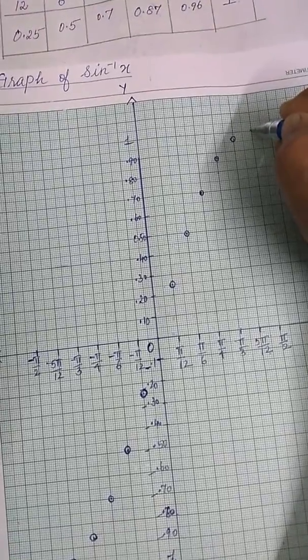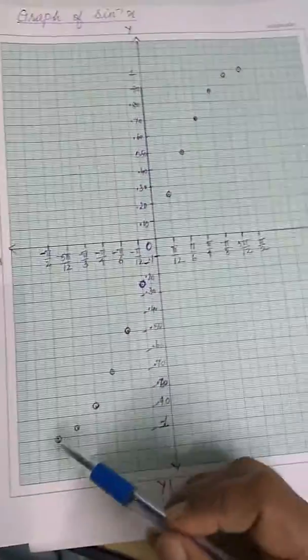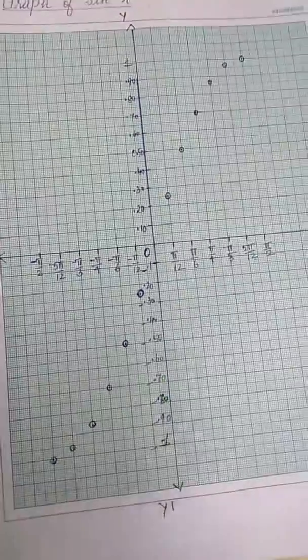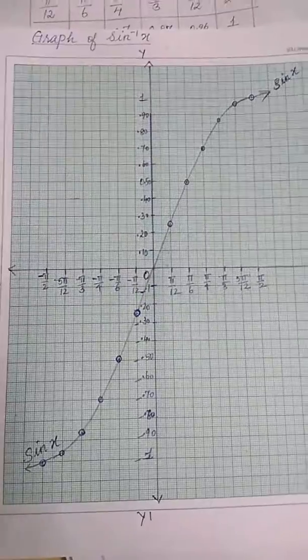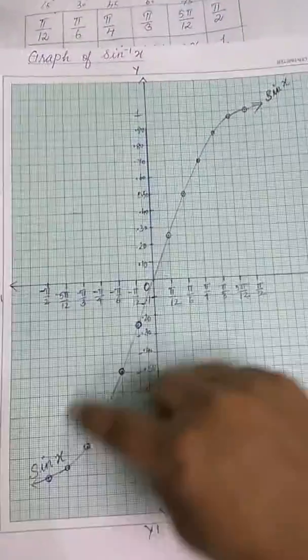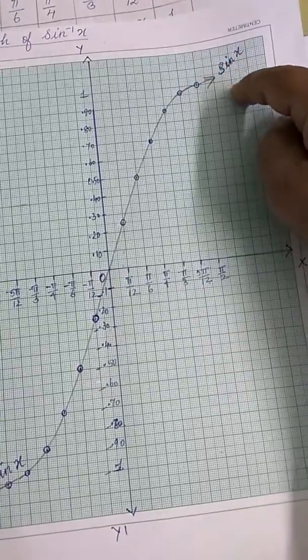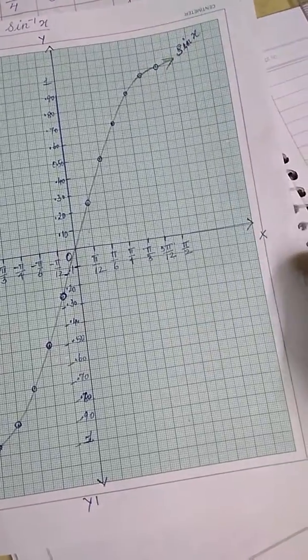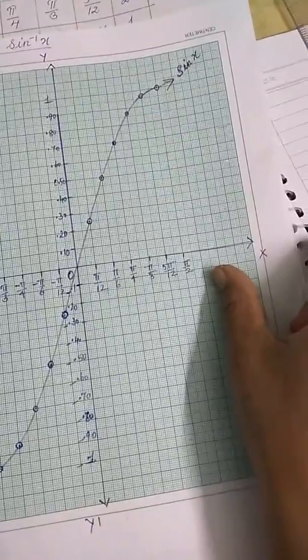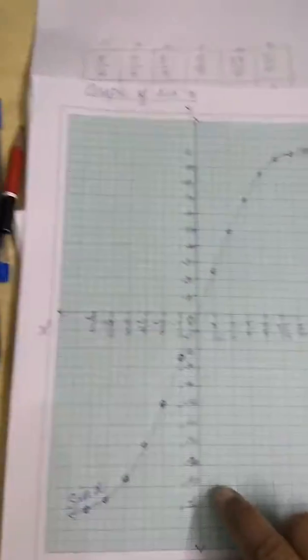Now we can join all these plotted points. You can see the path — join them to get a smooth curve. This is the sine x graph. If you continue this, the graph reaches its maximum and then curves downward for the next 180 degrees, reaching 0 again. This is sine x.